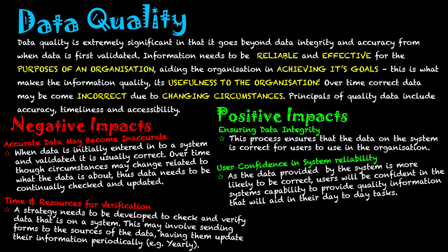The second positive impact is user confidence in the system's reliability. As the data provided by the system is more likely to be correct, users will be confident in the system's capability to provide quality information that aids them in their day-to-day tasks. For example, YouTube is a reliable system — uploading is easy, videos go online, viewers can watch them without issues, and the channel can be managed well. Because the data on YouTube is of quality, users are happy and confident to use the system.